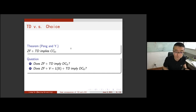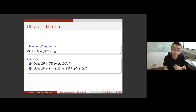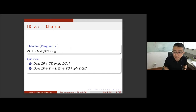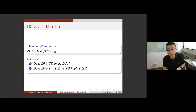We have some open problems. For example, does ZF plus TD imply DC itself? This is a stronger question than CF plus AD, which we also don't know. We also don't know whether CF plus V=L plus TD implies DC_R. I guess this should be true, but in Woodin's proof he uses full AD and a lot of machinery developed by Steel, which also needs full AD. So currently we don't know how to do this — it's an open problem.